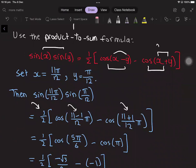This becomes half of cos 5π over 6 minus cos of π.